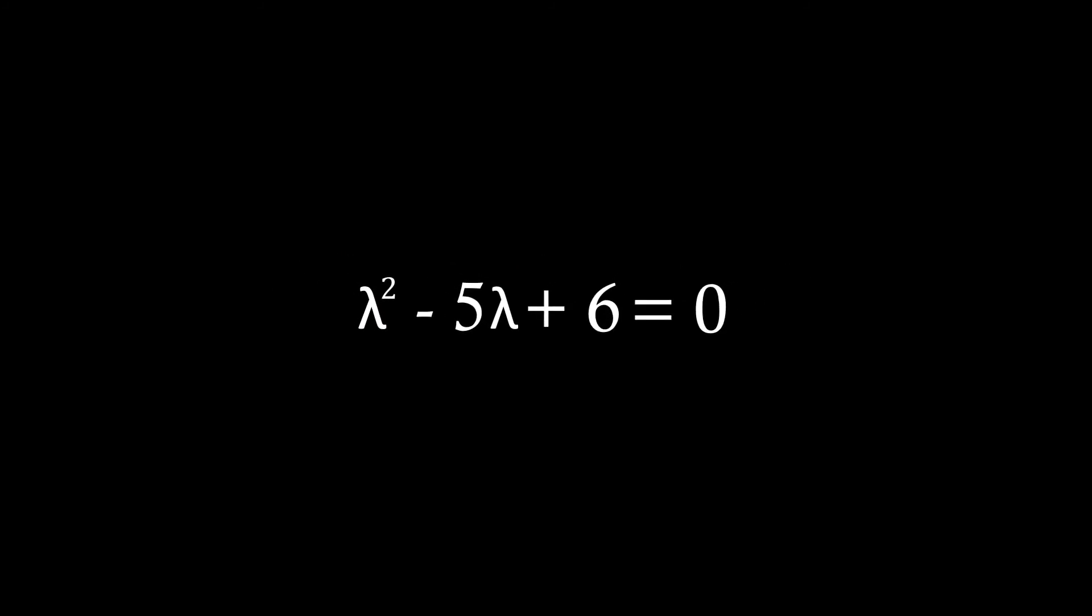Therefore, we're just leaving us with this simple quadratic, which we could either use the quadratic formula for, or we just factorize, giving us lambda minus 3 times lambda minus 2 equals zero.